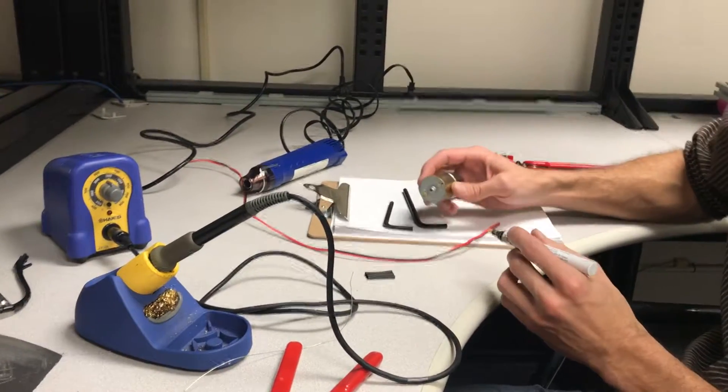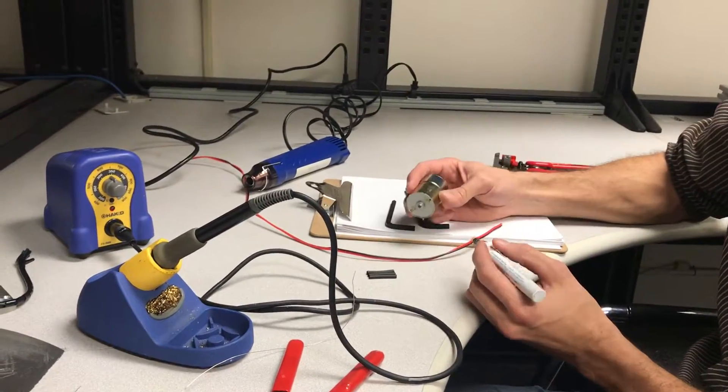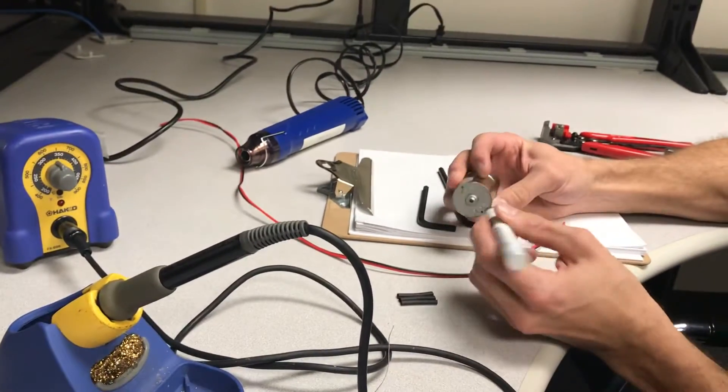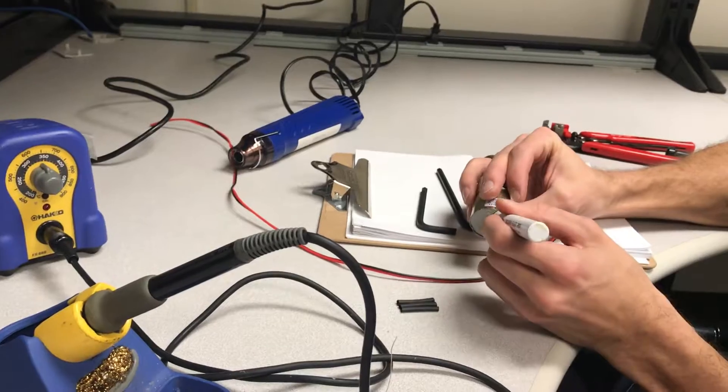Quick demonstration to solder your motors in a nice clean way. Make sure you get some rosin and put it on the contacts of the motor.